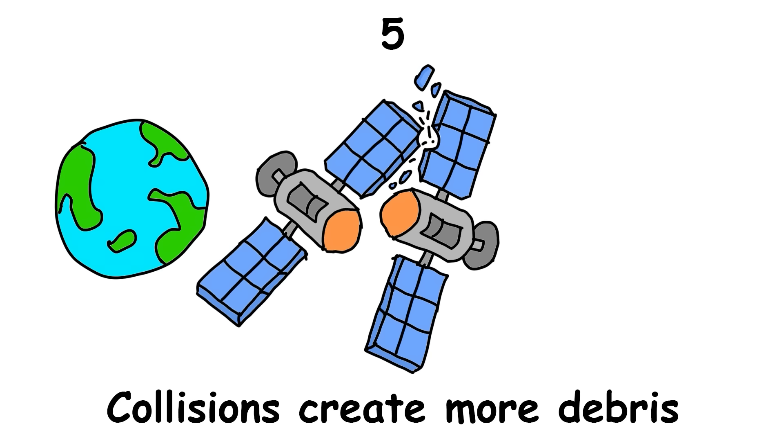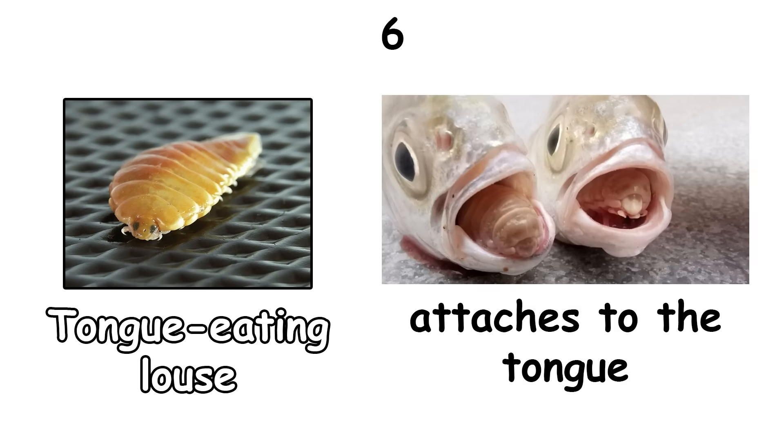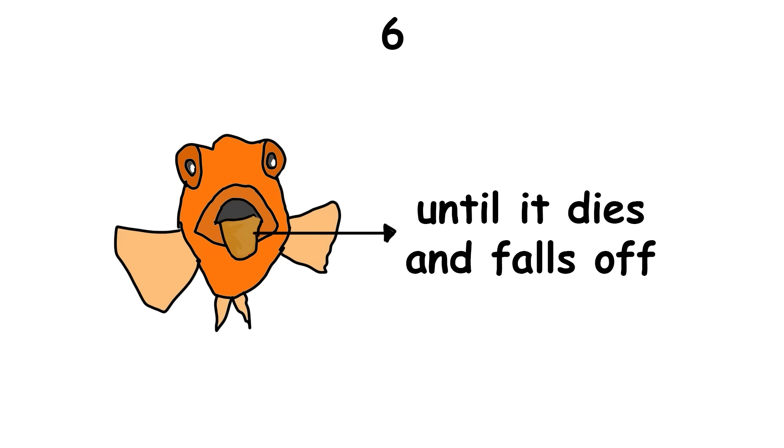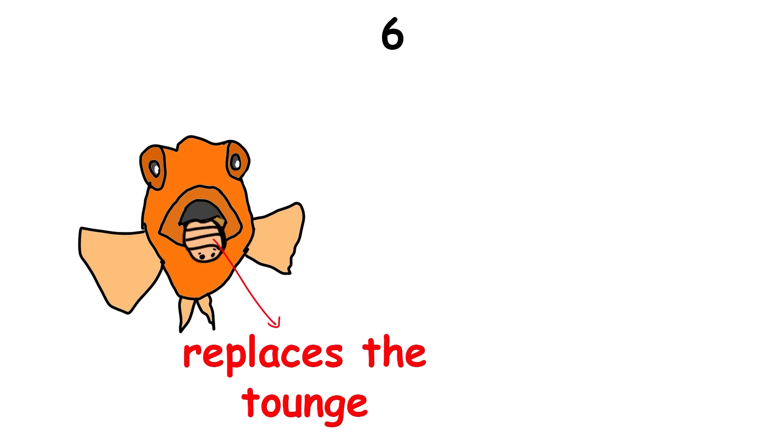The tongue-eating louse is a crustacean that attaches itself to the tongue of a fish and feeds on its blood until the tongue dies and falls off. The louse then replaces the tongue, essentially becoming a living prosthetic organ while continuing to feed off the fish.